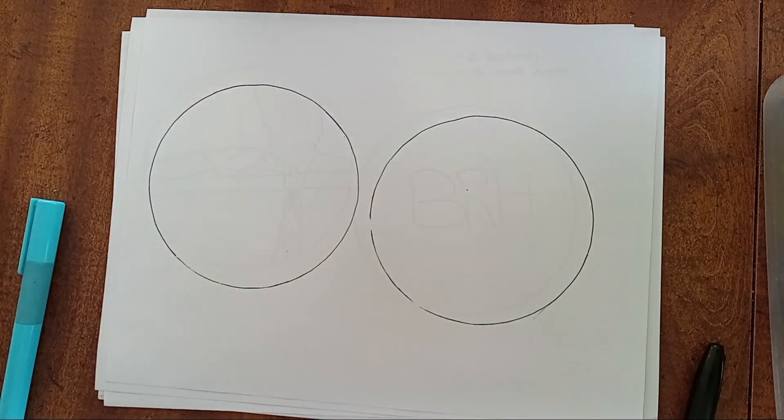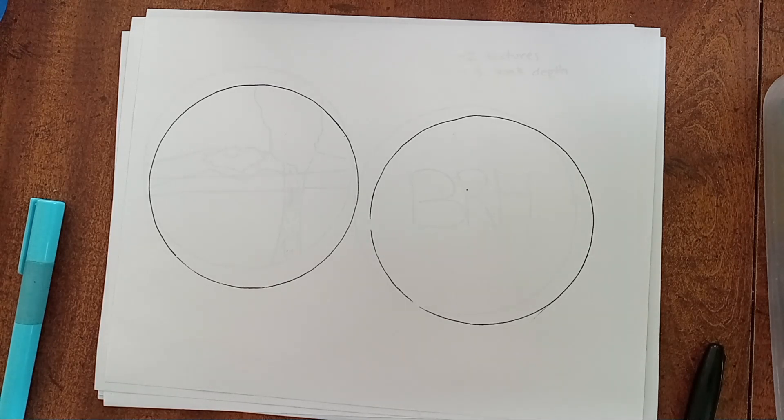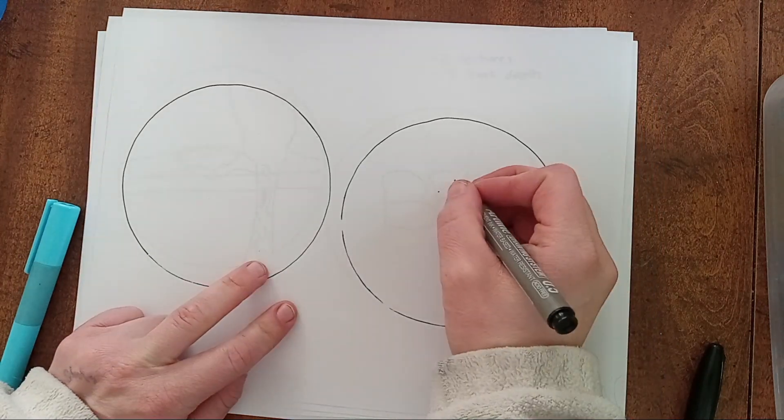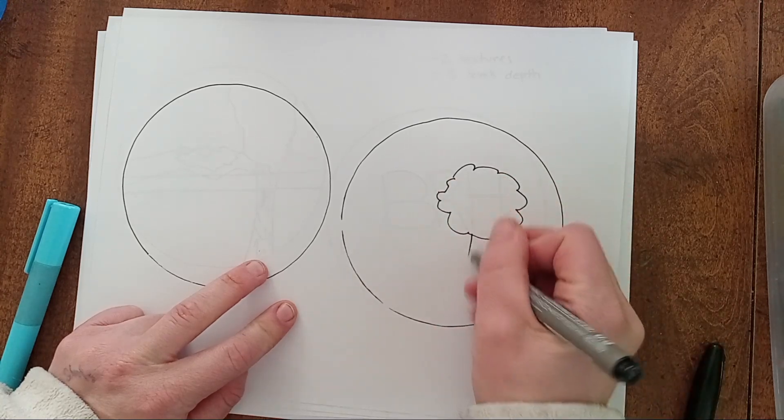With this assignment, you need to think about a foreground, middle ground, and background. You need to have at least three levels of depth. For example, I can have a tree right here. You can design whatever you want and you're welcome to look at reference images, but I'm just going to make something very simple here.